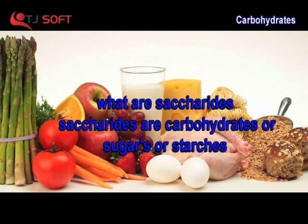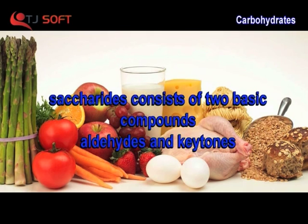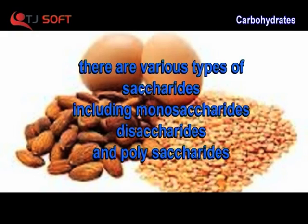What are saccharides? Saccharides, or carbohydrates, or sugars and starches, consist of two basic compounds: aldehydes and ketones. There are various types of saccharides, including monosaccharides, disaccharides, and polysaccharides.